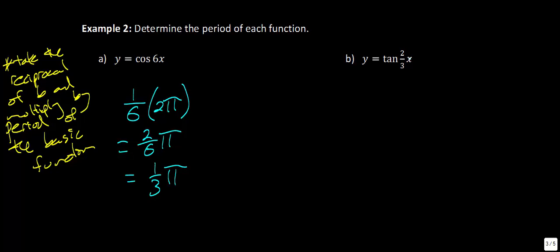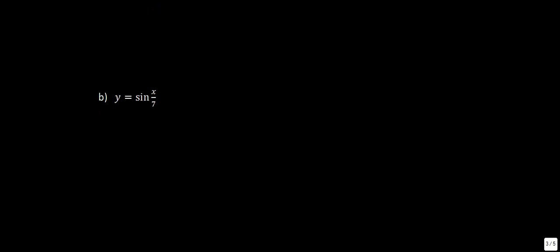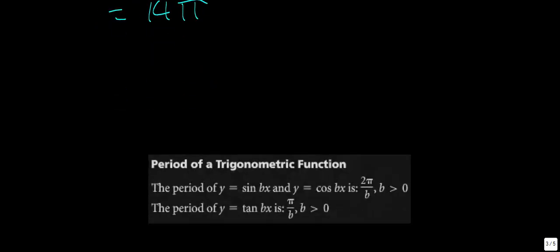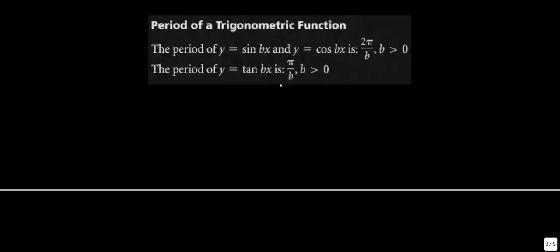For y = tan((2/3)x), the reciprocal of 2/3 is 3/2. The period of tangent is π, so the period is (3/2)π, also written as 3π/2. For y = sin(x/7), x/7 is the same as (1/7)x, so the reciprocal is 7. Multiplying by 2π gives a period of 14π.